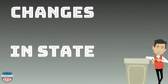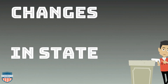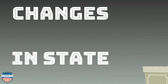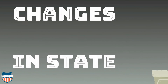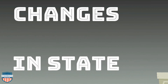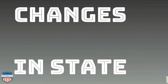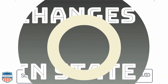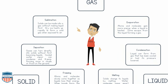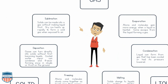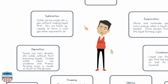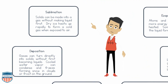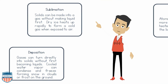Can states of matter change from one to another? States of matter can change. For example, water, a liquid, can turn into ice, which is a solid. Heat it up and the ice becomes steam, which is a gas. So the answer is yes. First, let's talk about sublimation. Solids can be made into a gas without making liquid first. Dry ice heats up rapidly to form a cold gas when exposed to air.